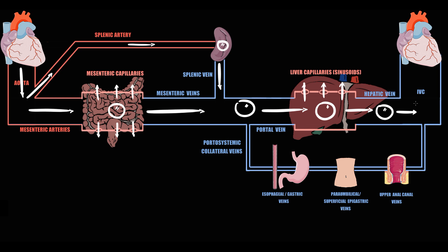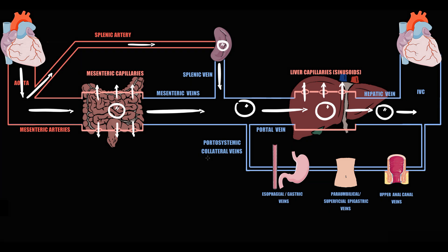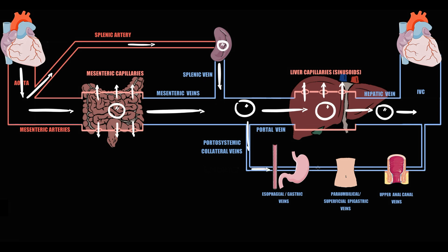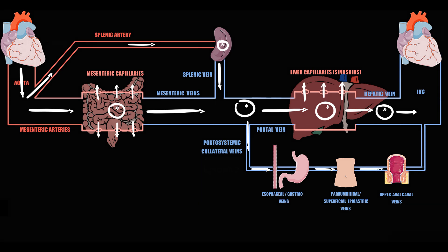We also have to know that in this system there are additional vessels that remain from embryogenesis — we call these portosystemic collateral blood vessels. Back in embryogenesis these vessels were crucial: they provided flow to esophageal and gastric veins, to paraumbilical and superficial epigastric veins on the anterior abdominal wall, and to upper anal canal veins. From these veins blood is drained into the inferior vena cava.